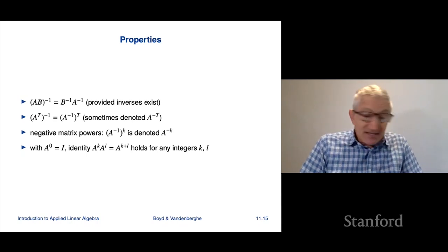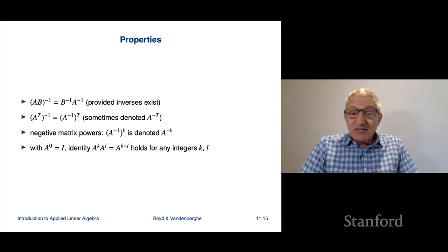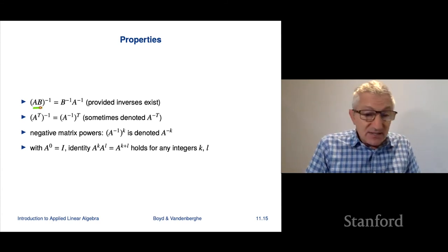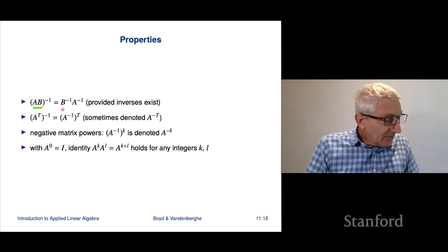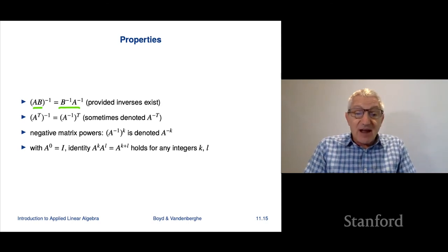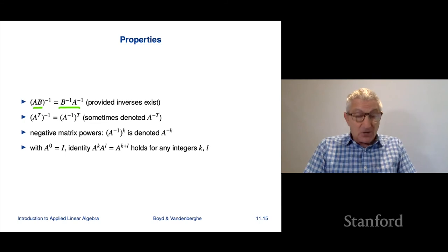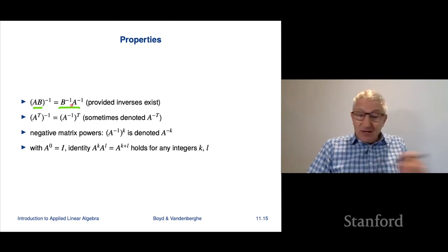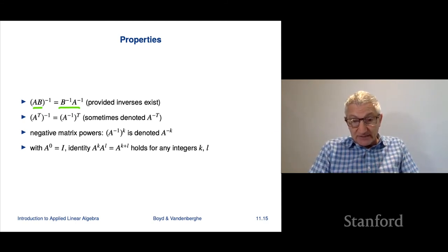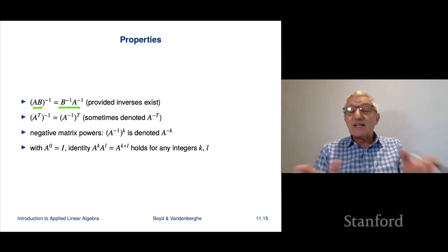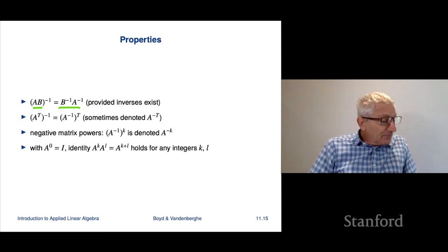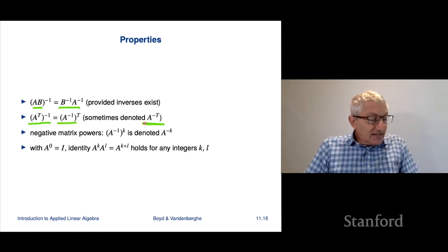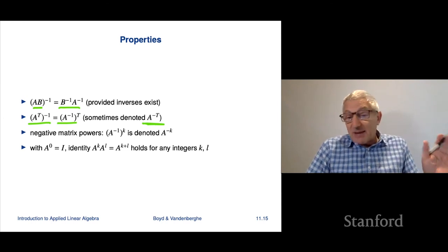There are useful properties of the inverse. The product of two invertible matrices: (AB)-inverse equals B-inverse A-inverse. This is like transpose — when you apply it to a product, it reverses the order. Also, A-transpose-inverse equals A-inverse-transpose, and some people write this as A to the minus-transpose. You would see that notation in papers and books.